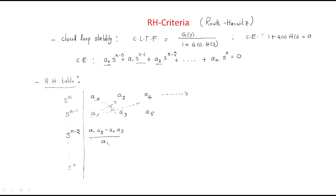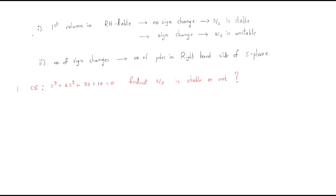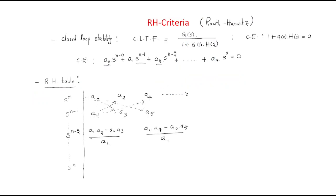The next element in that row is computed as: (a₁·a₄ − a₀·a₅) divided by a₁. This process continues to fill the entire RH table row by row. After completing the table, we analyze the first column of the RH table to determine stability.